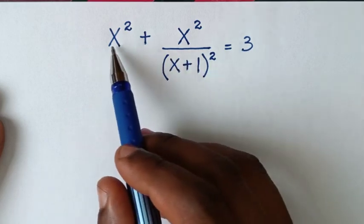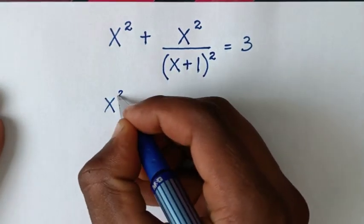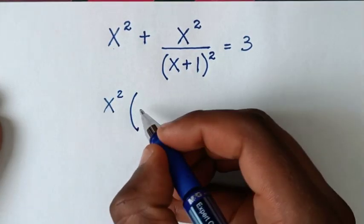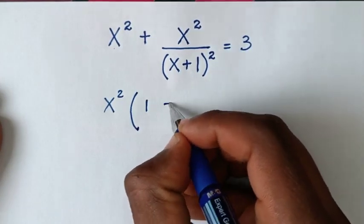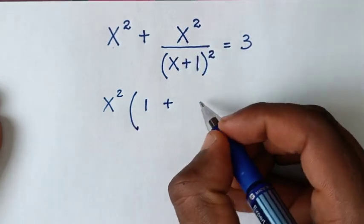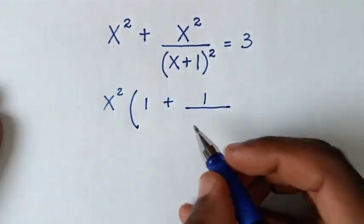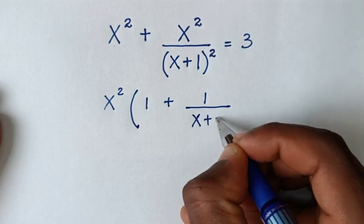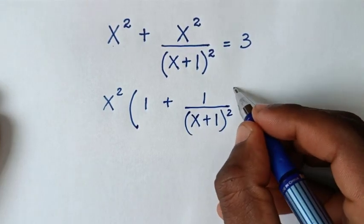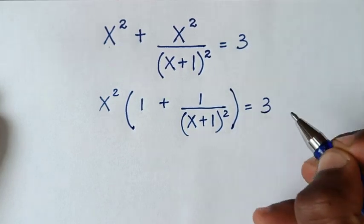In the first step, x² is common, so we take x² out of the bracket. Then x²/x² is 1, plus in the numerator x²/x² is 1, over the denominator (x+1)², equals 3.